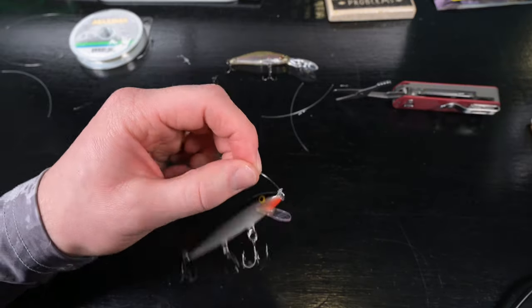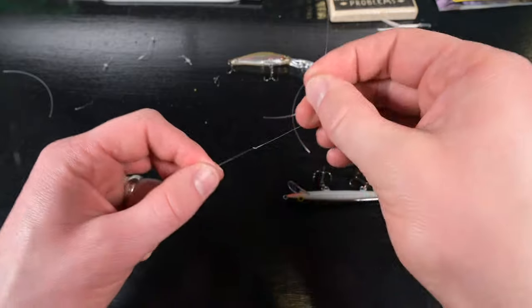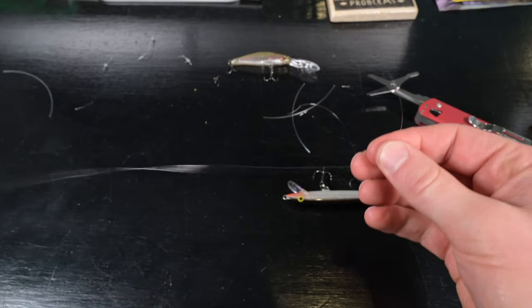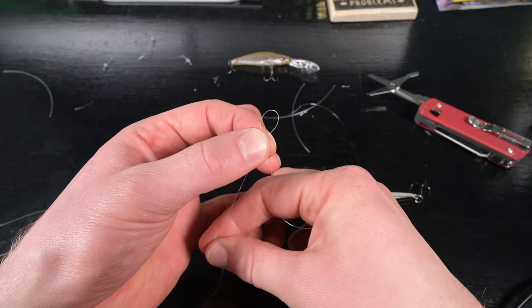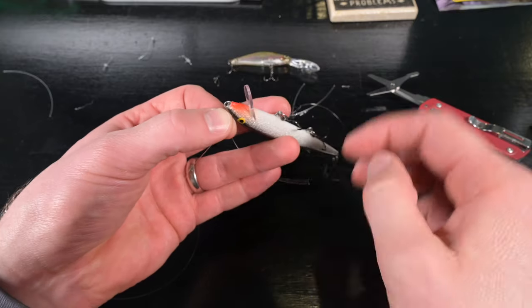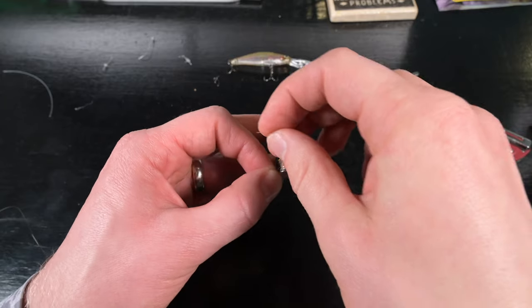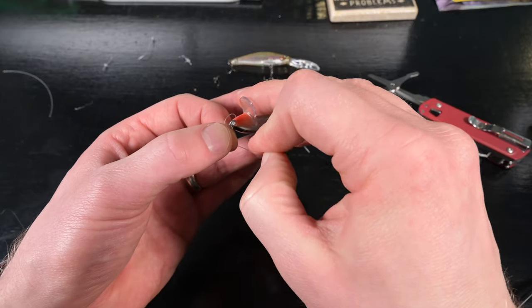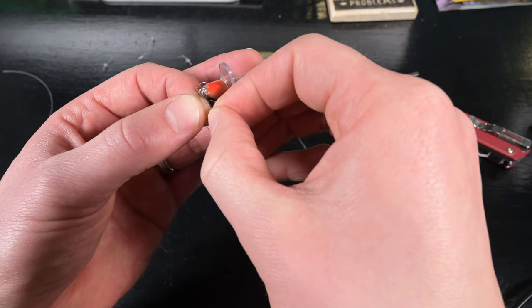Here we have our tiny eight pound line. We make our loop, take our line, pass the bitter end behind the standing end to make our loop small. We pass in our Rapala, bitter end goes through, back and around the standing end. Now we split the two loops just like that.